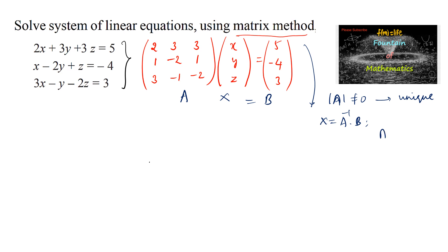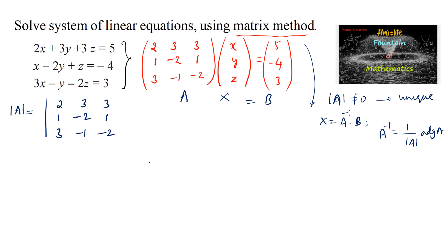Here, A⁻¹ = (1/det(A)) × adjoint of A. So let's find the determinant. det(A) is the determinant of the matrix [2, 3, 3; 1, -2, 1; 3, -1, -2]. Expanding along the first row: